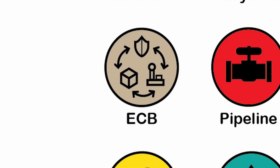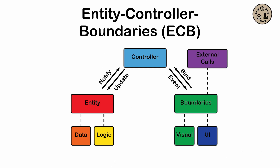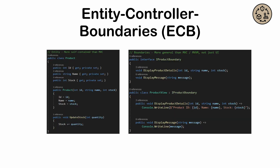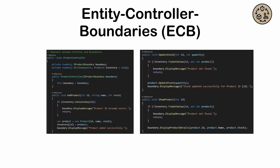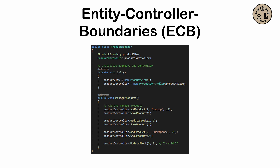Entity-Controller-Boundaries, or ECB. A design pattern focused on separating responsibilities into entities — data — controllers — the logic — and boundaries — interfaces. It's often used in applications where higher emphasis is placed on protecting data and creating a robust user interface. Otherwise, it's quite similar to MVC and other patterns that promote separation of concerns.